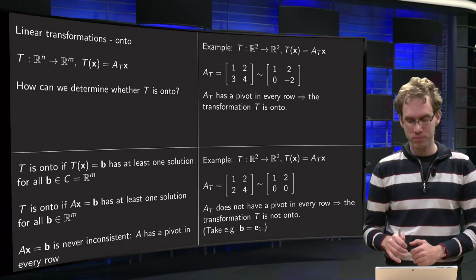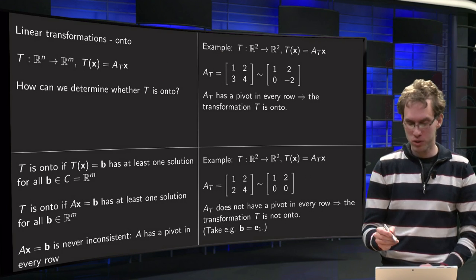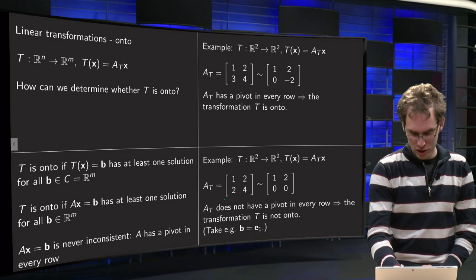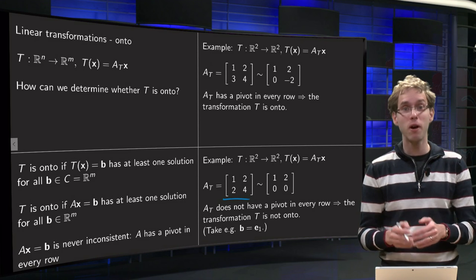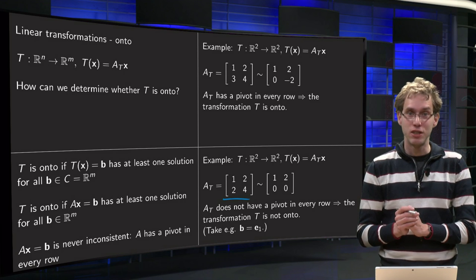Second example, T again from R² to R² given by A times x, and now we have a slightly different matrix here, not [1, 2; 3, 4], but [1, 2; 2, 4]. The question is, is this transformation onto? Well,